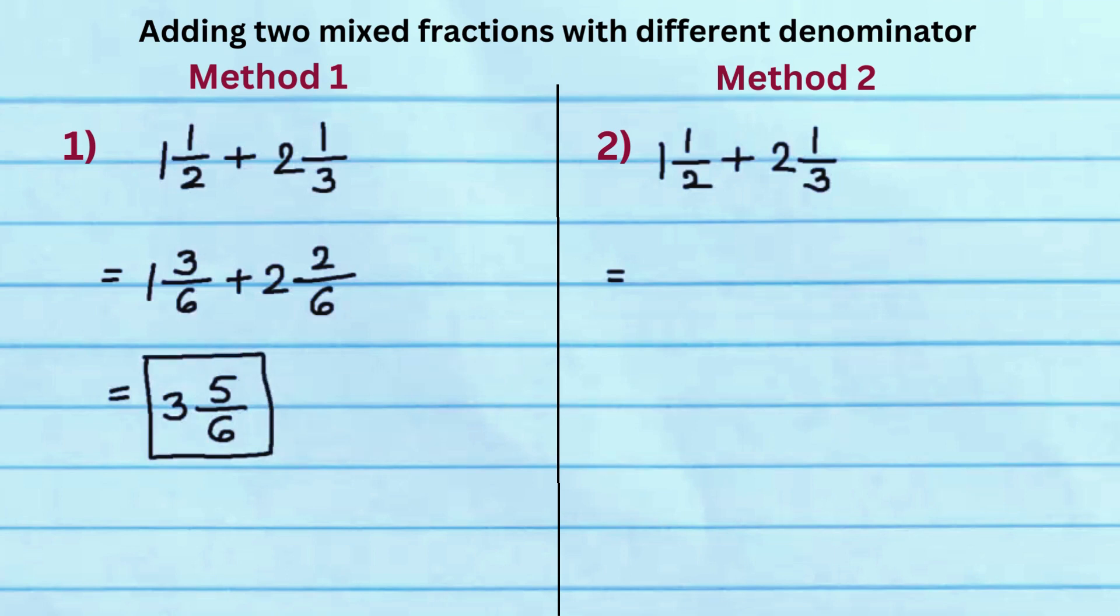In method 2, first convert the mixed fractions to improper fractions. Mixed fractions 1 and 1 half and 2 and 1 third are rewritten as 3 over 2 and 7 over 3.